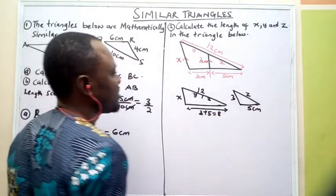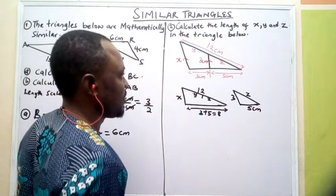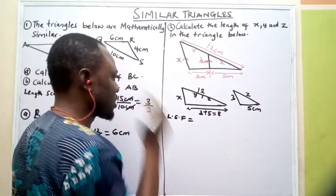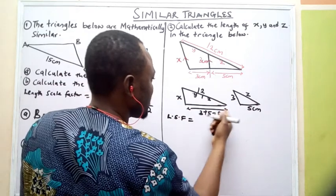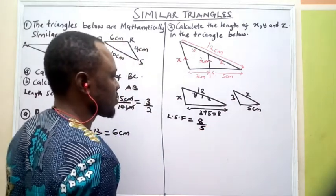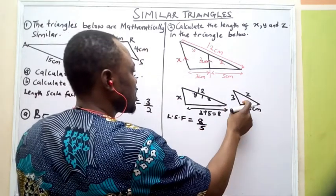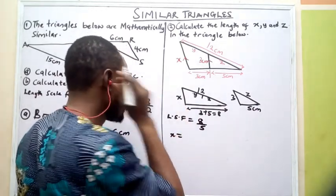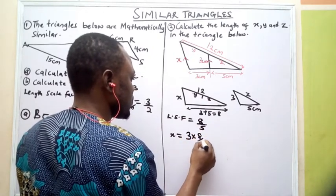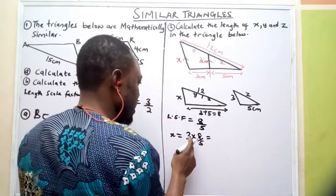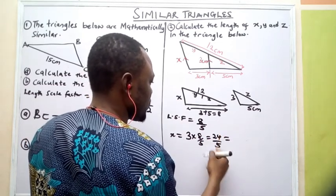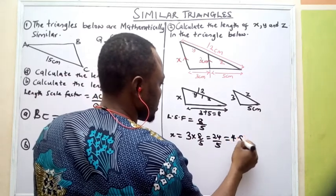We want to find the values of X, Y, and Z. We need a scale factor — LSF. The larger corresponding side is 8 divided by the smaller corresponding side, which is 5. Scale factors have no units. I'm moving from the smaller side to the bigger side, so X will be the smaller corresponding side multiplied by the length scale factor: 5 times 8 over 5, which gives 3 times 8 equals 24 divided by 5, giving me 4.8 cm.